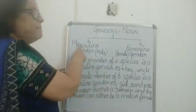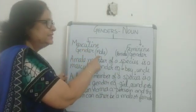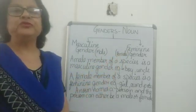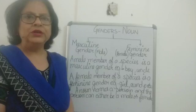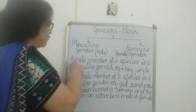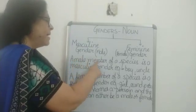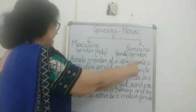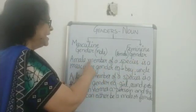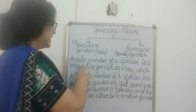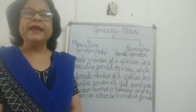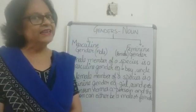Two types of genders for Class 2: masculine gender means males, and feminine gender means females. Now I would like to explain the definition of genders. A male member of a species is a masculine gender. For example: boy, father, uncle, and so on.